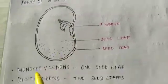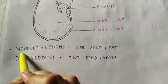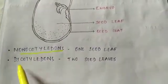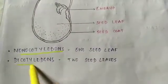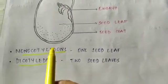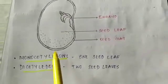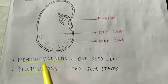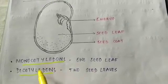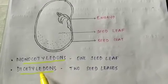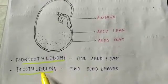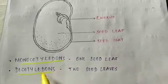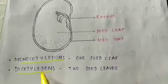Now, there are types based on seed leaves, that is monocotyledons and dicotyledons. Some seeds have only one seed leaf or one cotyledon — that is known as the monocotyledon. And some have two seed leaves or two cotyledons — they are known as the dicotyledons.